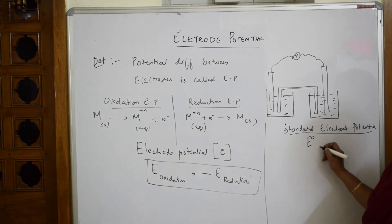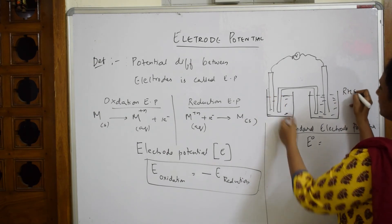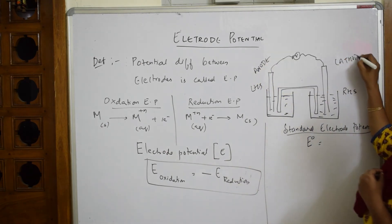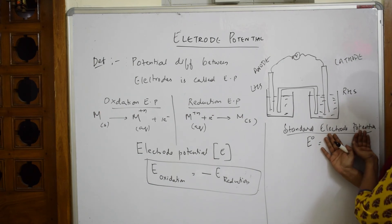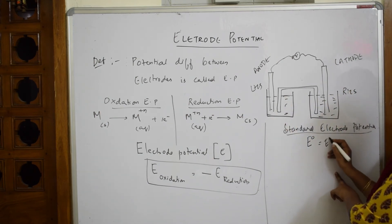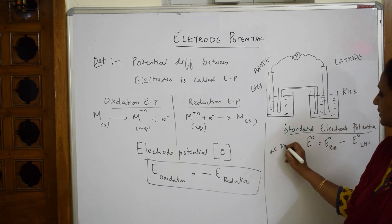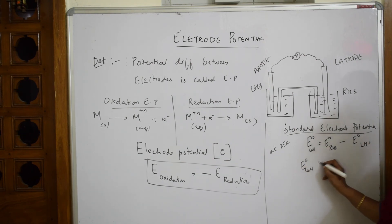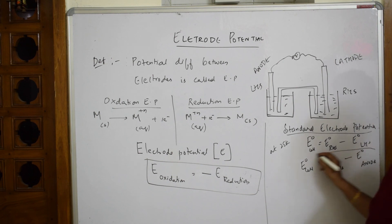The standard electrode potential of the cell, E° cell, is always equal to E° right minus E° left — that is, E° cathode minus E° anode. So at standard conditions (25°C), you can write: E° cell = E° cathode − E° anode. That is your E° cell formula at standard conditions.